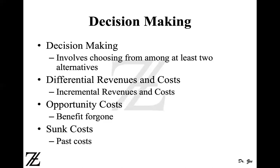Opportunity cost is the benefit foregone — something you gave up to do something else. From our first example, if you accept the job at Company B, you gave up Company A's job — that's the opportunity cost of working for Company B. Similarly, if you gave up school to work, the opportunity cost of working is giving up school. Or the opportunity cost of going to school is giving up your income from work.